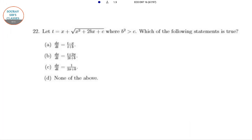Let t = x + √(x² + 2bx + c) where b² ≥ c. Which of the following is true? If you rearrange this as t - x = √(x² + 2bx + c) and square both sides, the square root will be eliminated.